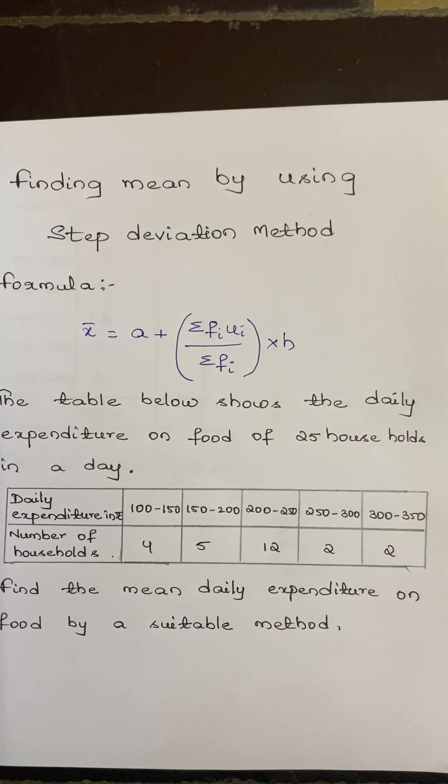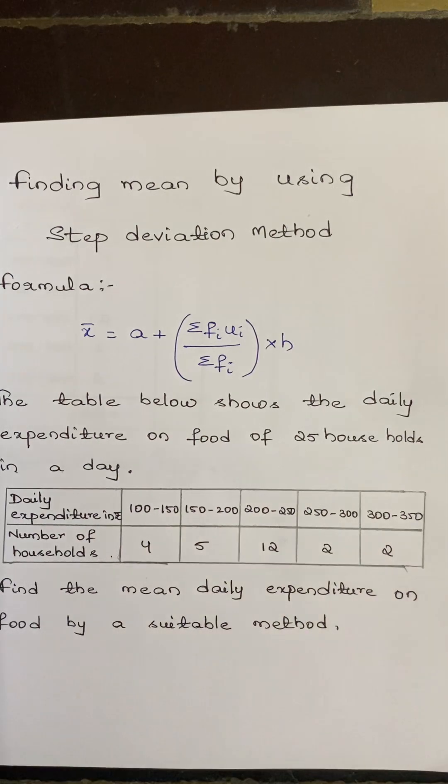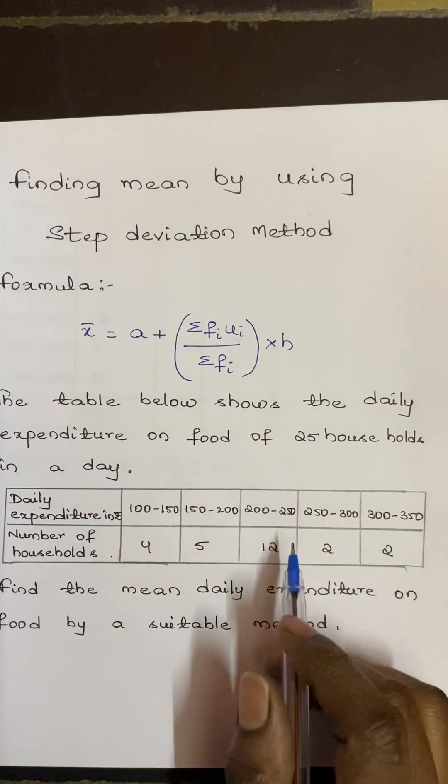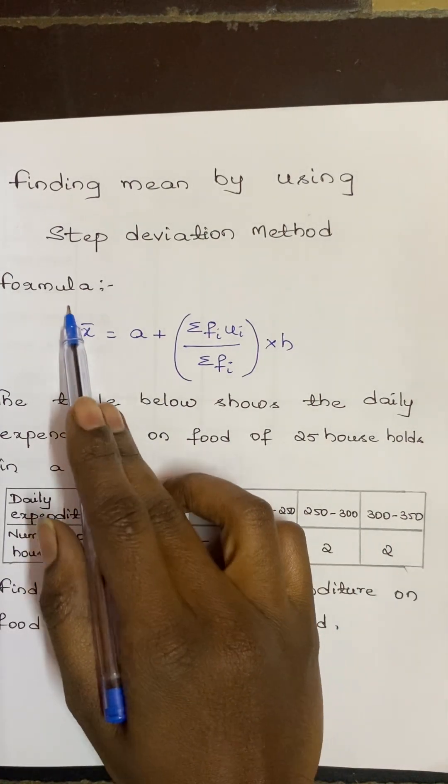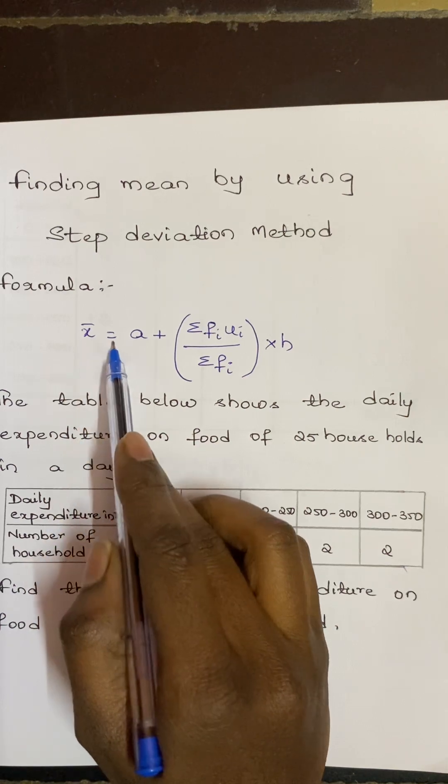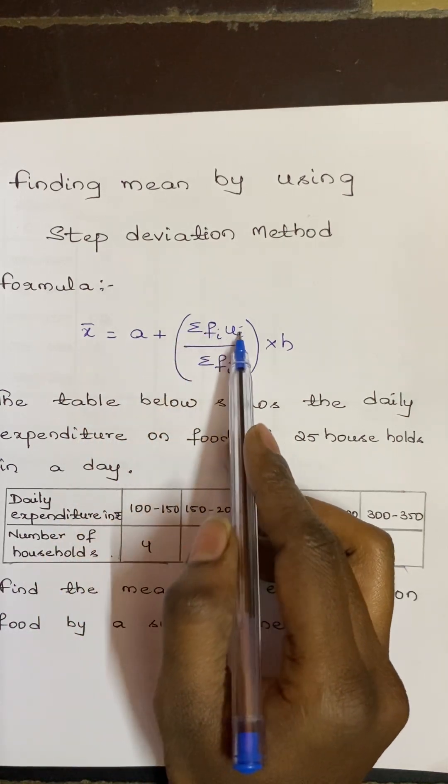So before going on to the sum, first we have to know what is the formula used for finding the step deviation method. So x̄ = a + (Σfi·ui/Σfi) × h is the formula.